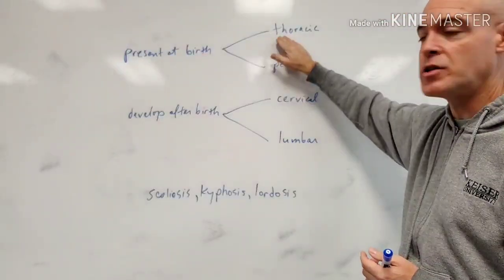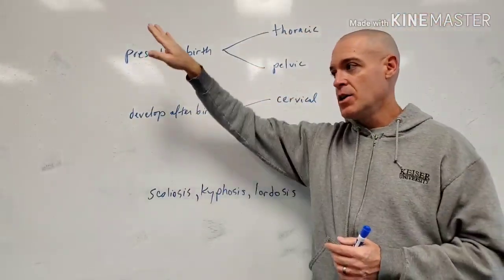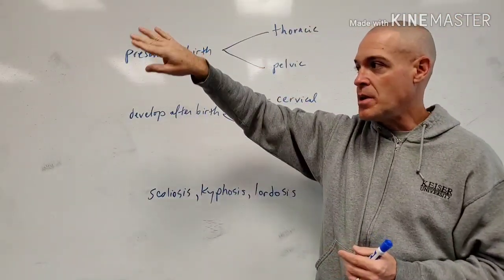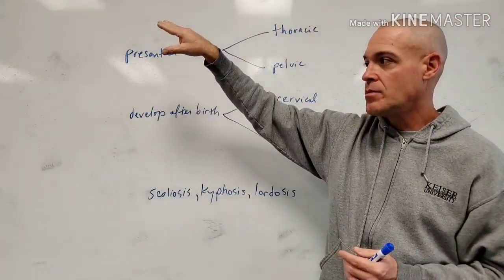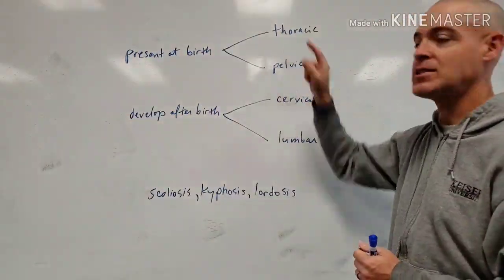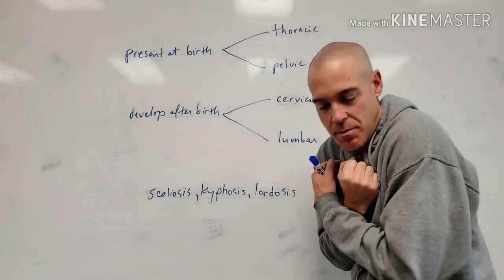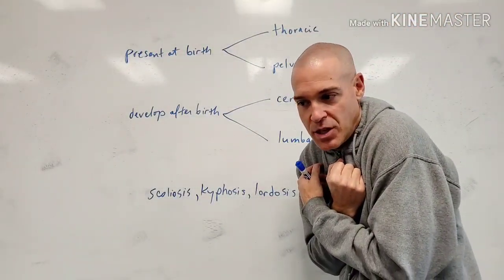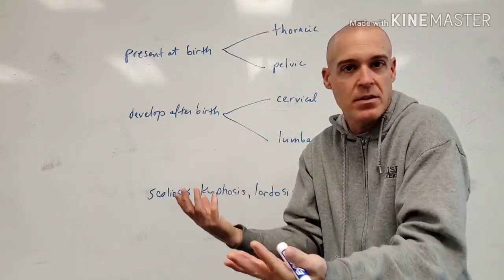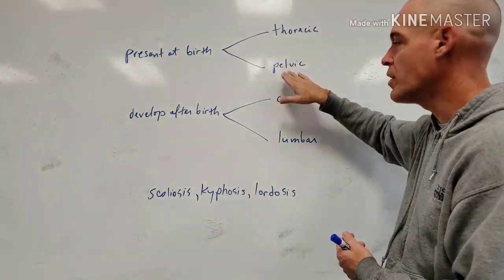The first spinal curvature is the thoracic spine or thoracic spinal curvature. So that curvature, of course, is just going to be a smooth kyphotic-type curve in the thoracic region because the baby's going to basically be in the fetal position or want to be in the fetal position after birth basically the whole time, right? So there's going to be a thoracic curve and there's going to be a pelvic curve.